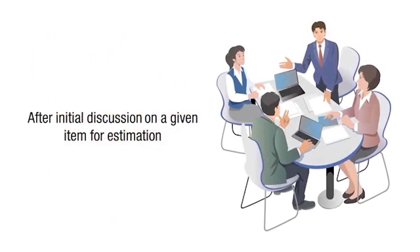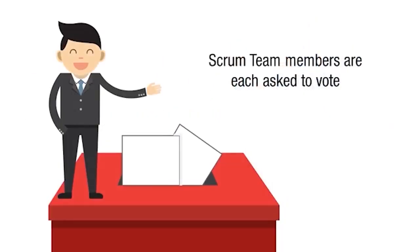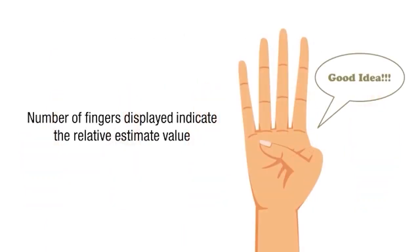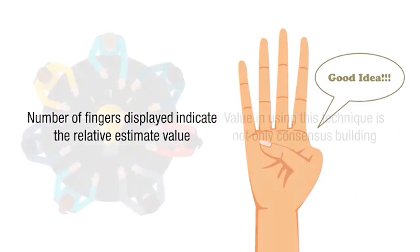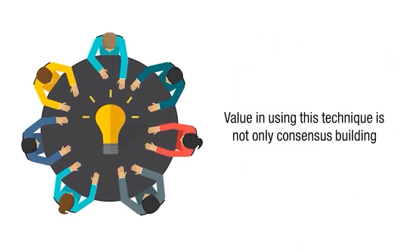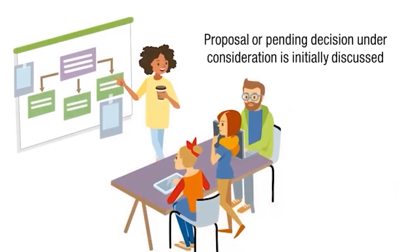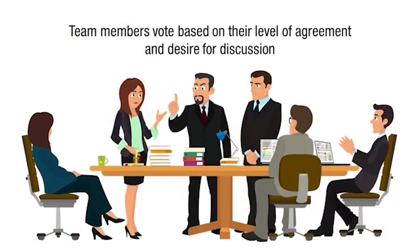After initial discussion on an item for estimation, Scrum Team members are each asked to vote on a scale of one to five using their fingers. The number of fingers displayed indicates the relative estimation value. The value of this technique is not only consensus building but also driving discussion, as team members explain the reason for their estimates. As a consensus building tool, the team votes based on their level of agreement. One finger means disagreement with major concerns.